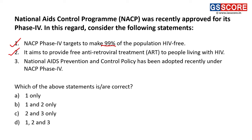Third statement: the National AIDS Prevention and Control Policy was adopted recently under NACP phase 4. This statement is incorrect, because the National AIDS Prevention and Control Policy was adopted under NACP phase 2 in 2002 itself, not phase 4. Therefore the answer is B, 1 and 2 only.